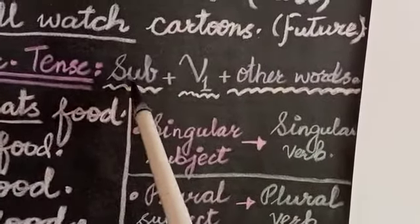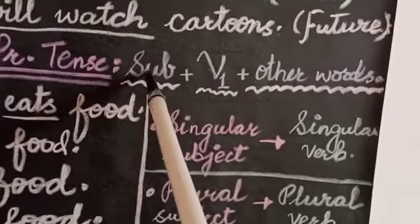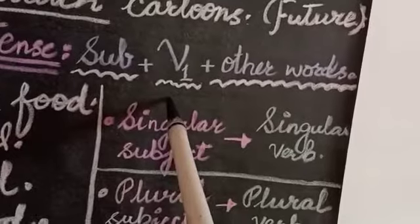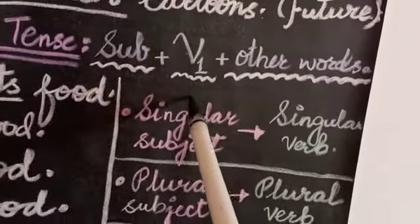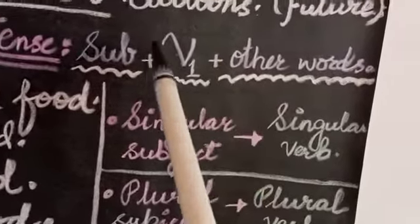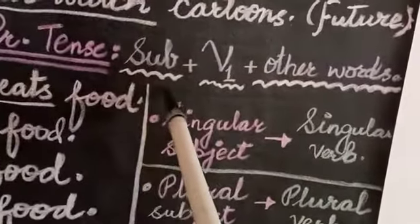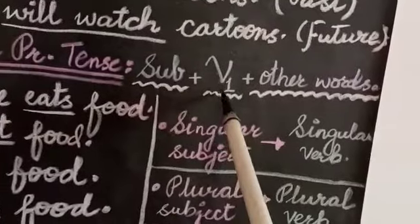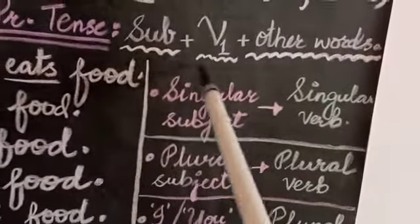For simple present tense, the structure is: first write the subject — the doer of the action or about whom we talk — then use the first form of the verb. The first form of the verb can be singular or plural: singular verb is verb plus 's', 'es', or 'ies', and plural verb is the verb not ending in 's', 'es', or 'ies'. Then add the remaining words. So the structure is: Subject + First Form of Verb + Other Words.